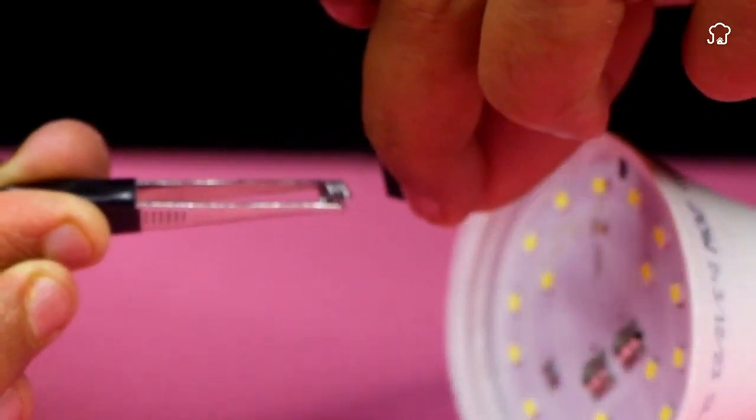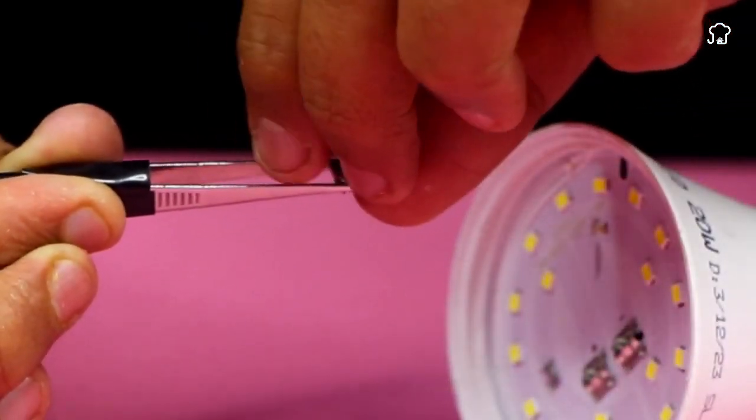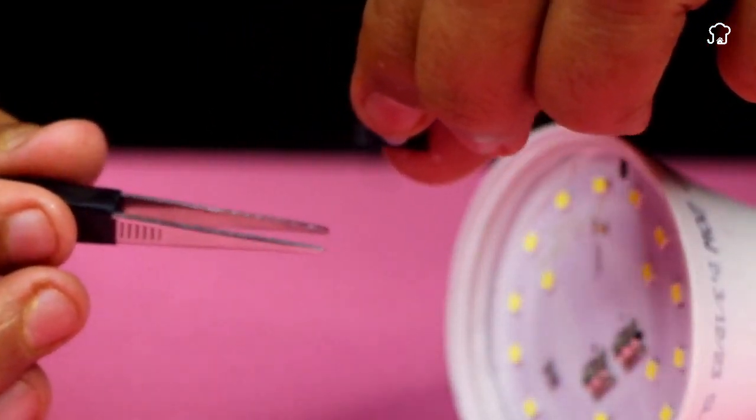We'll place the small spring in the middle of the adhesive tape, creating a bridge that replaces the damaged filament.